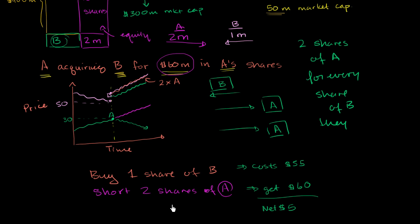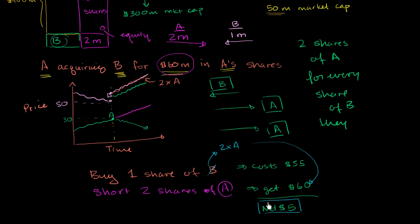Assuming the transaction happens, at some future date when it closes, the 1 share of B you hold can be exchanged for 2 shares of A. You then use those 2 shares of A to cover your short position, and you're left with $5. There is the risk that the transaction didn't close, but assuming it happened, this was essentially a free $5 for your taking.